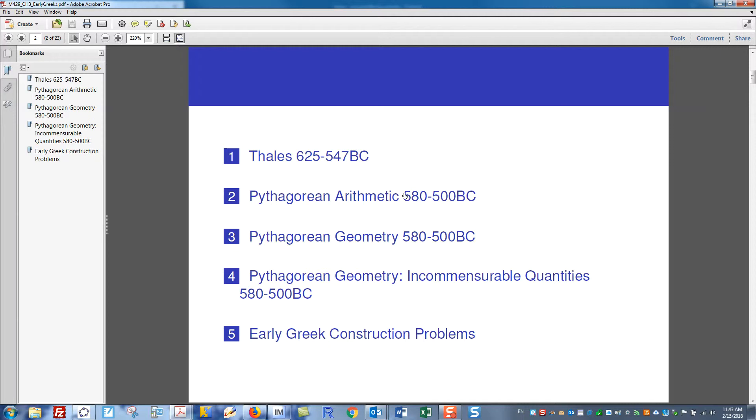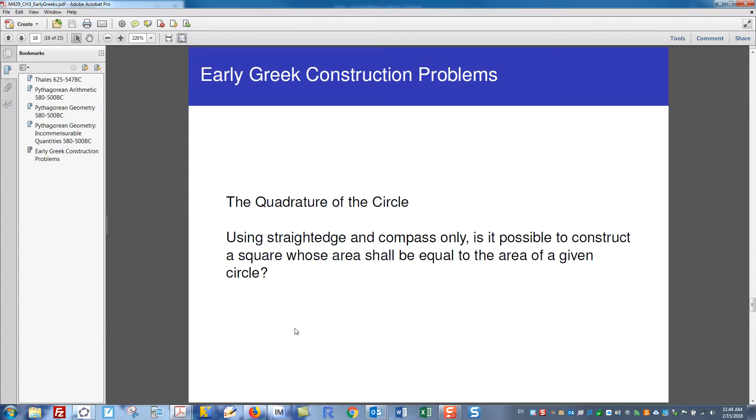We took a look at Thales, the Pythagorean notions of arithmetic and figurate numbers, as well as their early notions of geometry that led into the crisis of incommensurable quantities. And then we left off where we were talking about early Greek construction problems.